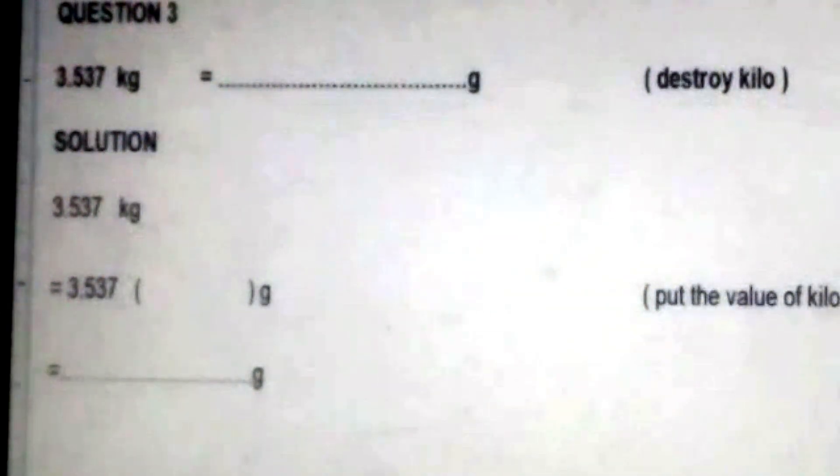Third question of today's classwork: 3.537 kilograms are equal to dash grams. Solution: start with 3.537 kilograms. In the second step, destroy kilo by putting its value.